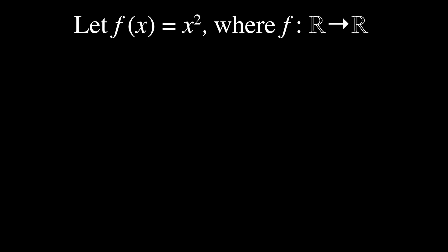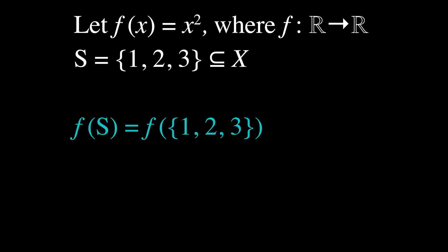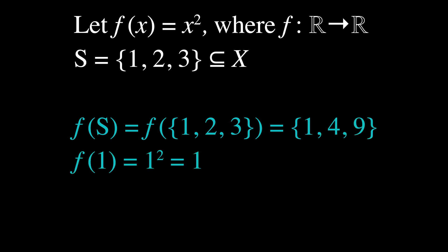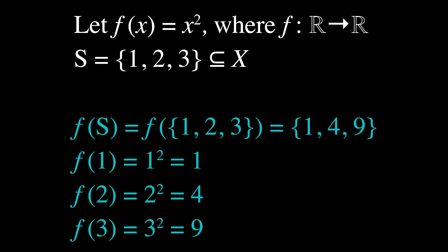For example, let f(x) = x² be a function that maps real numbers to real numbers, and let S = {1, 2, 3} be a subset of the domain of f. The image of S under f is the set {1, 4, 9}, since f(1) = 1² = 1, f(2) = 2² = 4, and f(3) = 3² = 9. Therefore, f(S) = {1, 4, 9}. The concept of an image of a subset is useful in many areas of mathematics, including calculus, topology, and algebra, among others.